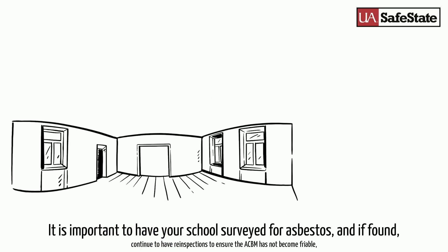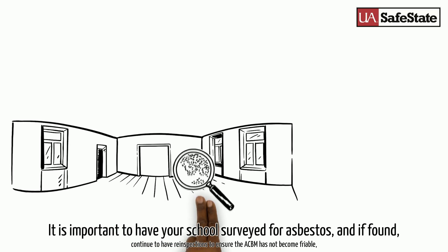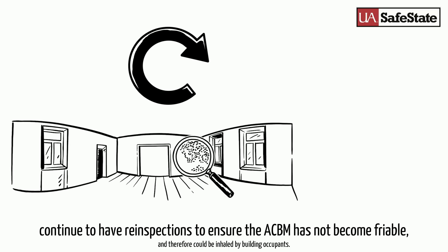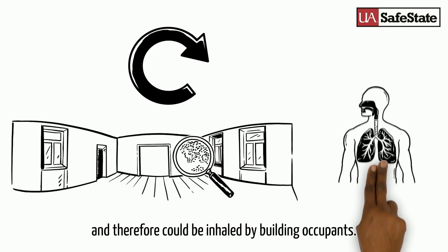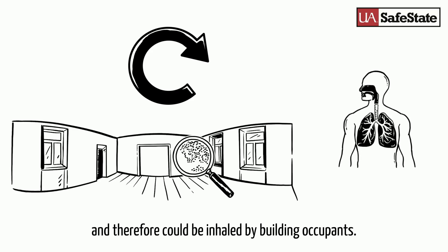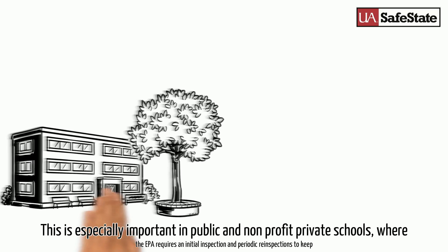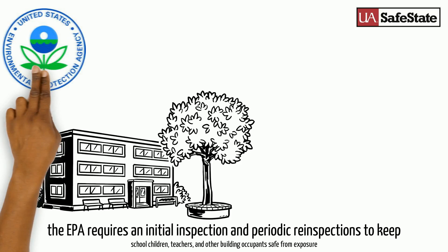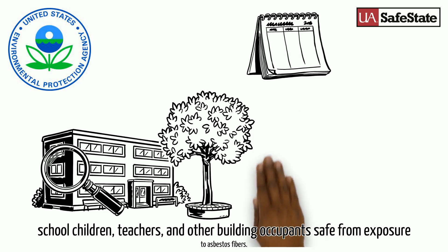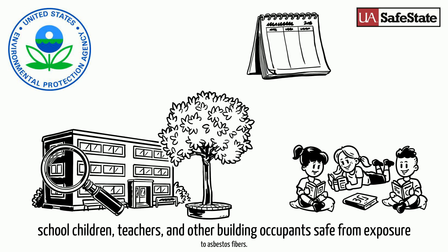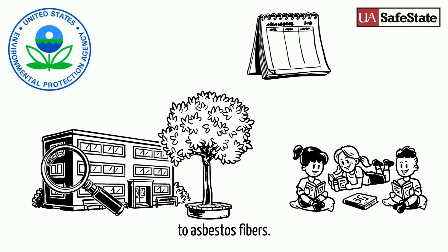It is important to have your school surveyed for asbestos and, if found, continue to have re-inspections to ensure that the asbestos containing building material has not become friable and therefore could be inhaled by building occupants. This is especially important in public and non-profit private schools, where the EPA requires an initial inspection and periodic re-inspections to keep school children, teachers, and other building occupants safe from exposure to asbestos fibers.